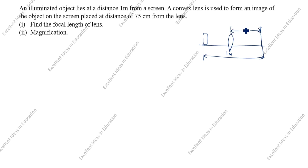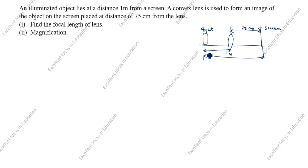So the object is here and the screen is here — this distance is one meter. The convex lens forms an image on the screen at 75 centimeters from the lens. The remaining distance to the object is x, so x plus 75 equals 100 centimeters. Therefore x equals 100 minus 75, so x equals 25 centimeters.